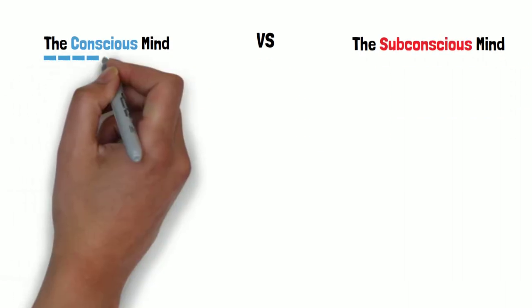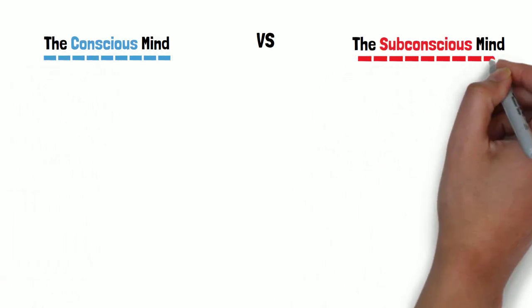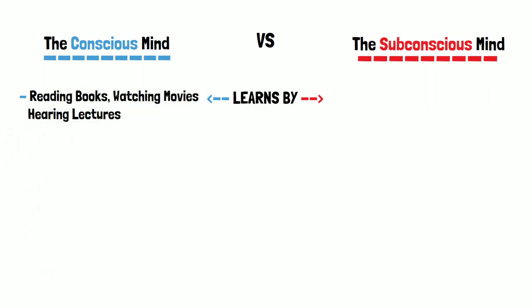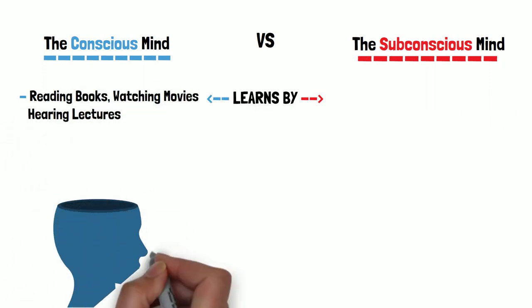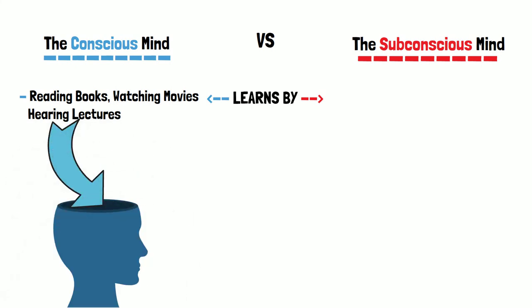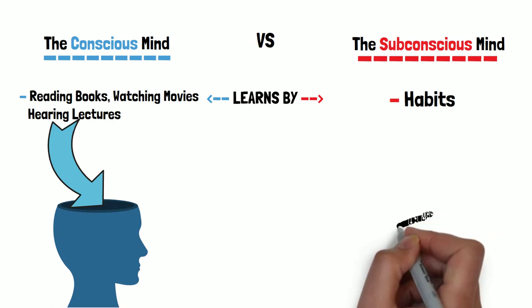Conscious mind can read a book, watch a movie, hear a lecture—it's downloaded, it already knows. The subconscious mind doesn't learn that way. The subconscious mind is a habit mind. There's two ways to get programs into that subconscious mind.